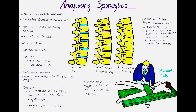Something high yield to note is that the HLA-B27 allele is present in over 90% of individuals with ankylosing spondylitis, although not everyone with this allele will develop the condition. Environmental factors such as infections and lifestyle habits have also been implicated in the development of ankylosing spondylitis.